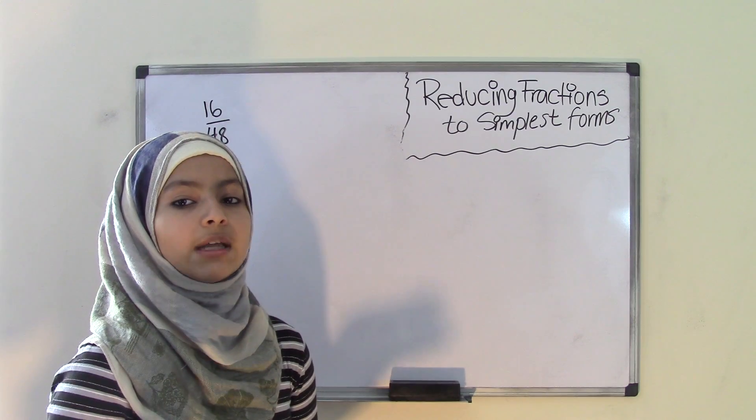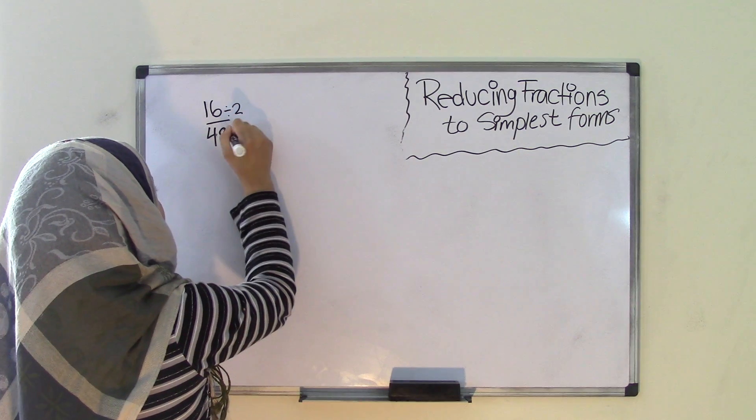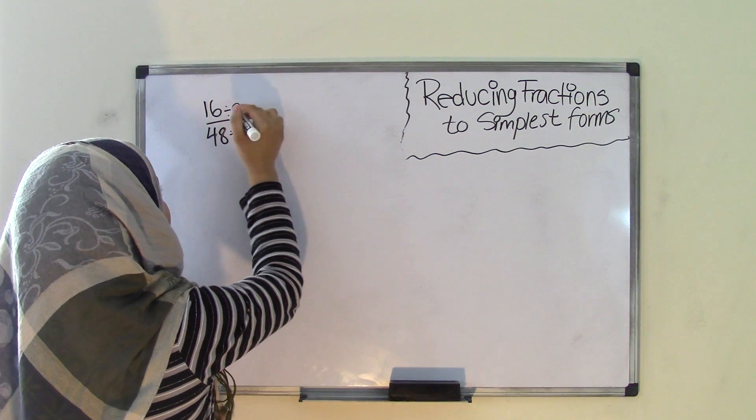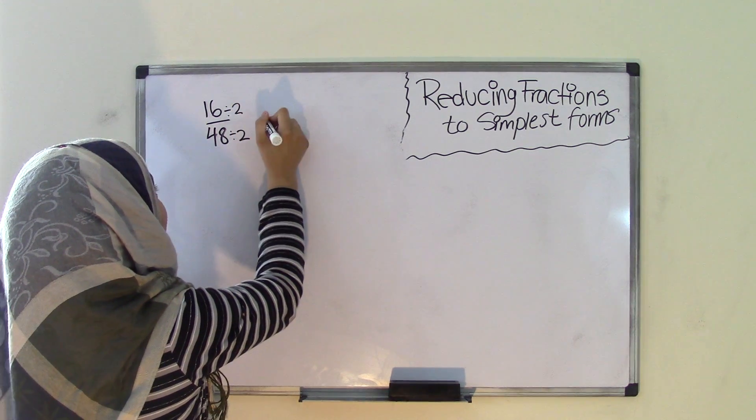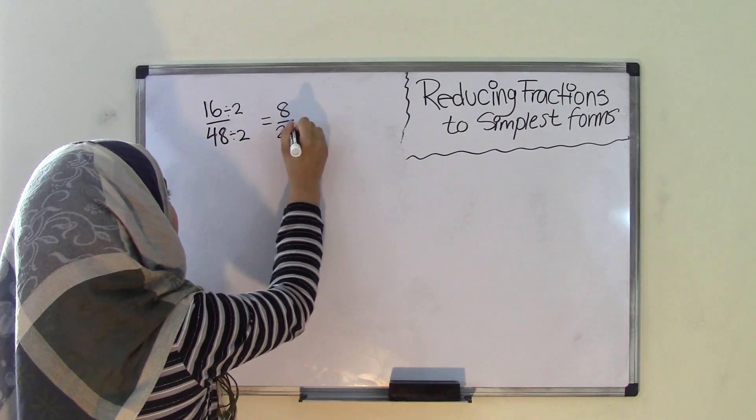Because remember, any even number can be divisible by 2. So 16 divided by 2 and 48 divided by 2. And we know that 16 divided by 2 is equal to 8 and 48 divided by 2 is equal to 24.